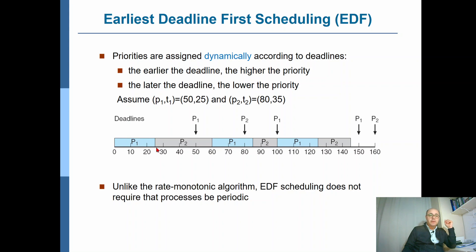So now we're free in terms of p1 until the next occurrence of p1. Therefore, we can schedule p2 now. p2 starts execution, and at t equals 50, p1 appears again, but this time its next deadline is at 100, for the second occurrence of p1.